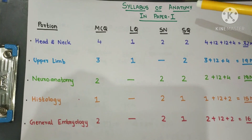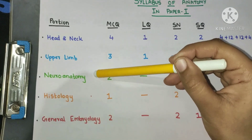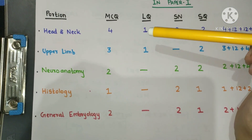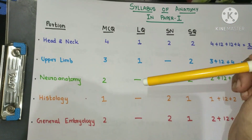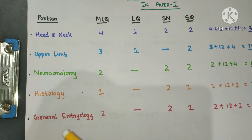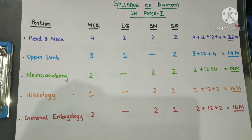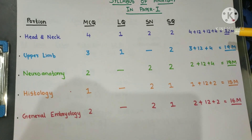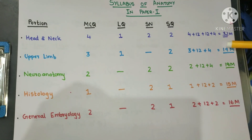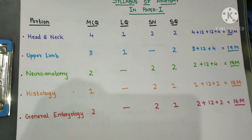Now let's look at the syllabus of anatomy paper one. The portions asked in paper one are: head and neck, upper limb, neuroanatomy, histology, and general embryology. Embryology is studied as a continuous subject but divided into two portions — general embryology in paper one and systemic embryology in paper two. From this chart you can see the weightage of each portion. 32 marks are carried by the head and neck portion, so roughly one third of the 100 marks comes from head and neck.